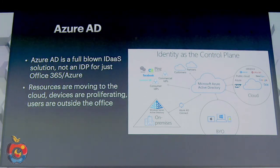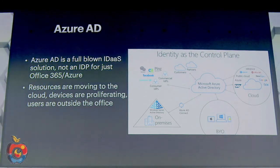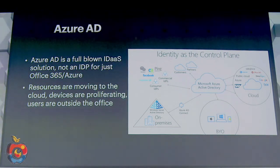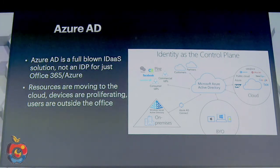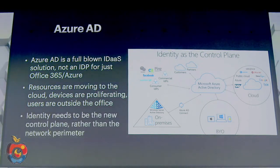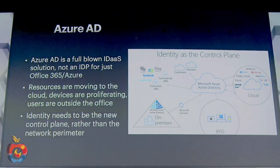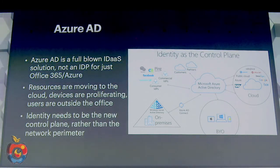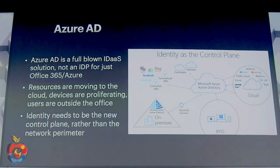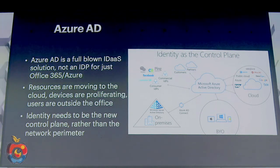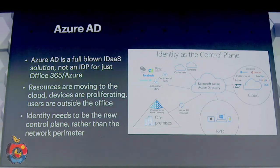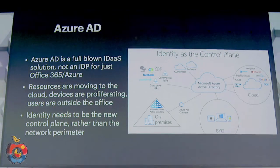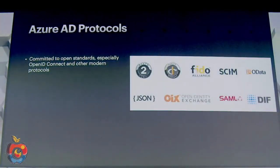A big trend is that resources are moving to the cloud in ever greater numbers, devices are proliferating, and users are working outside the office. The old security paradigms — like protecting everything behind the firewall and the corporate network — don't really apply anymore. The industry is moving toward identity being the control plane rather than the network perimeter.